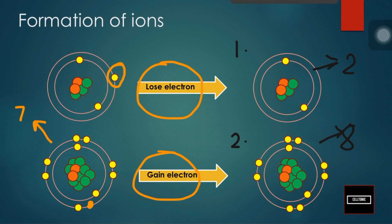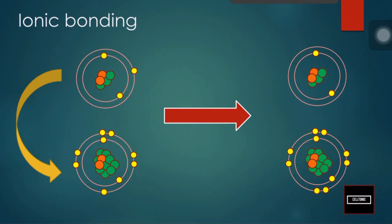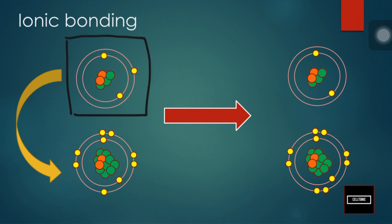During ionic bonding, atoms lose or gain electrons to form ions. When a metal atom and a non-metal atom come together, they form an ionic bond. This happens when the metal atom gives its electron to the non-metal atom to form a cation and an anion.